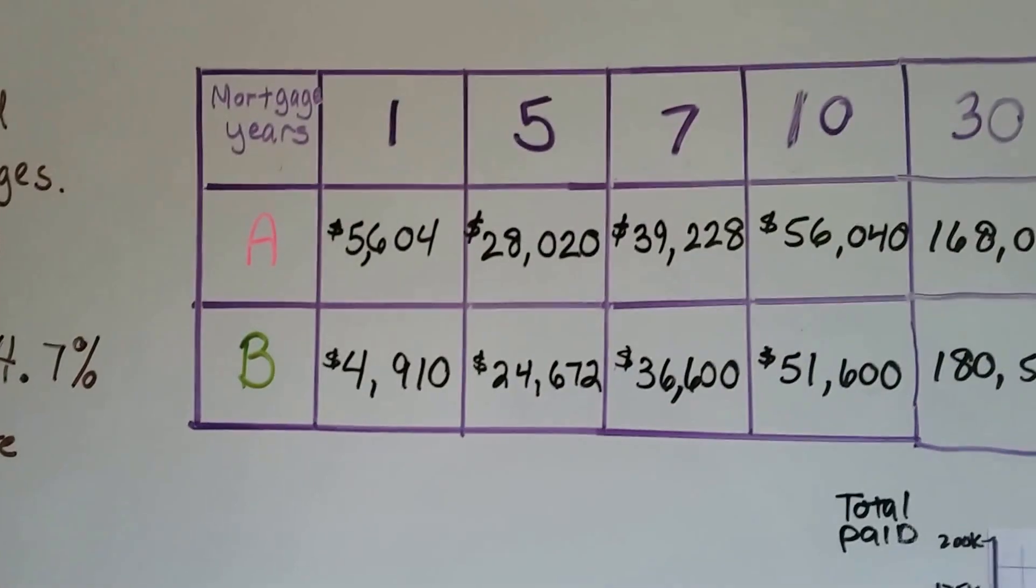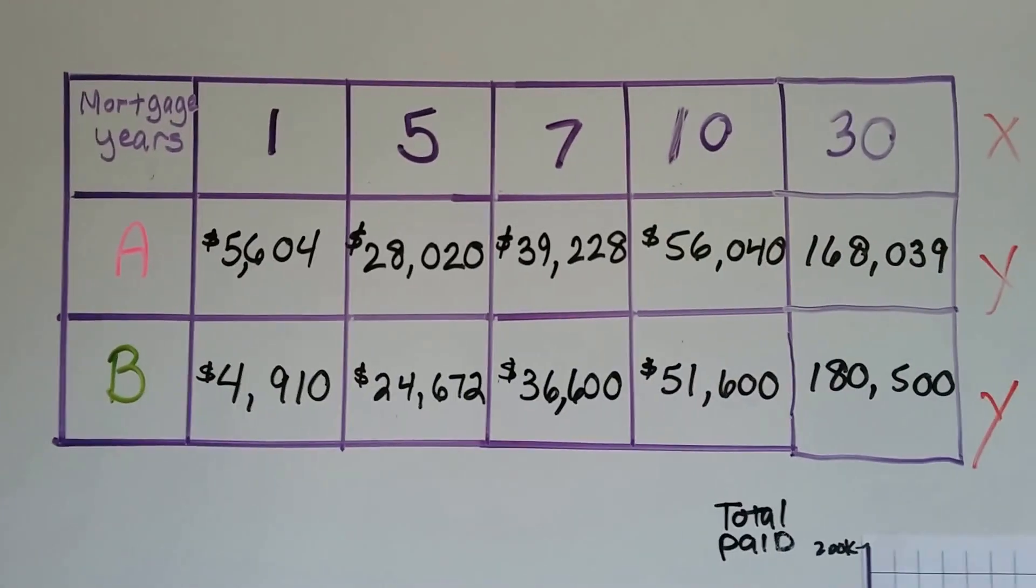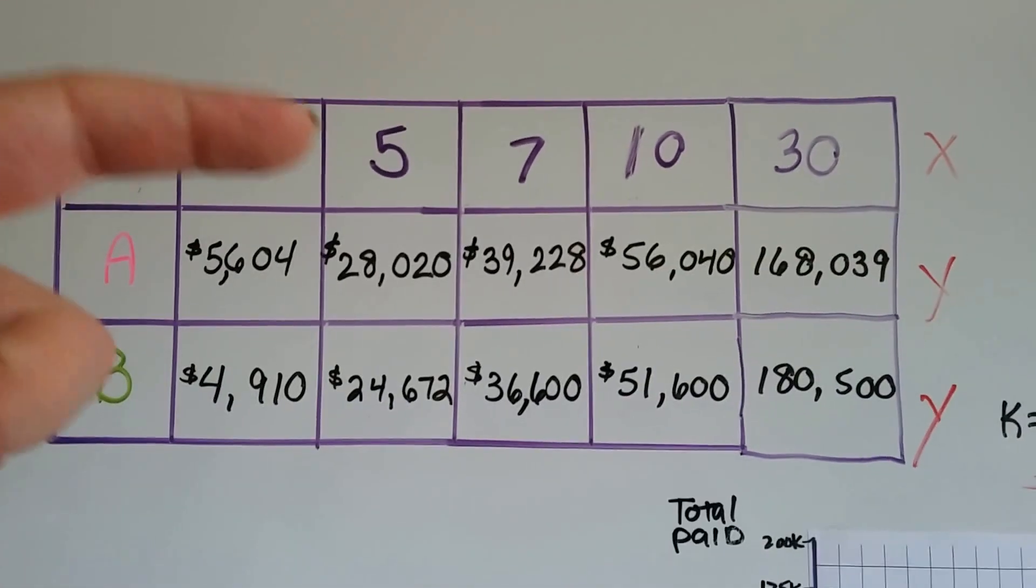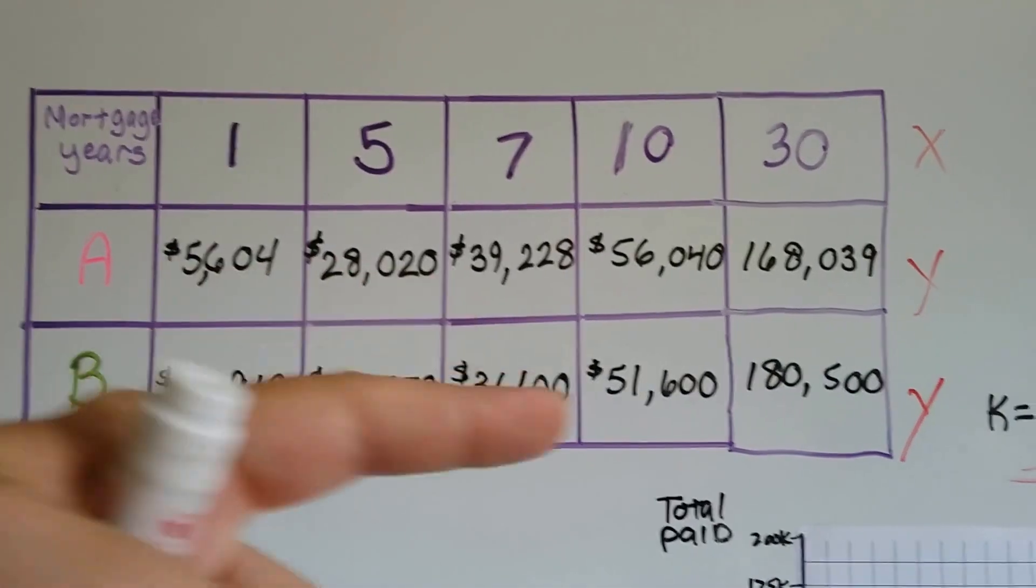In the table, we show the mortgage years of 1, 5, 7, 10, and 30. These are X, and these are Y.